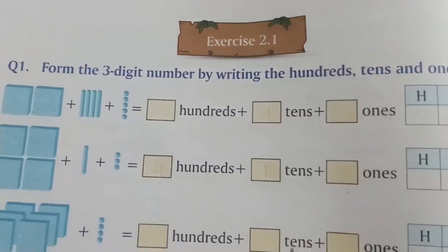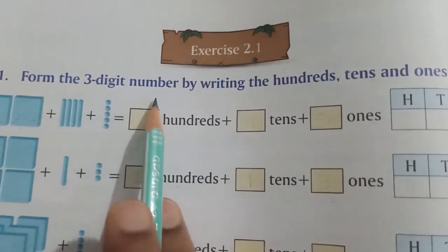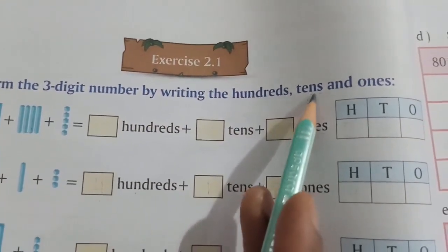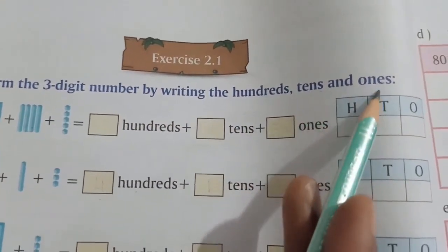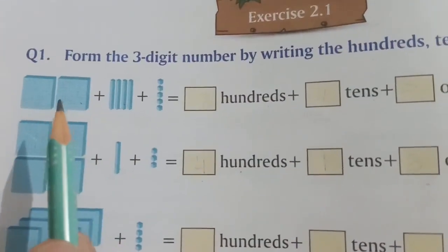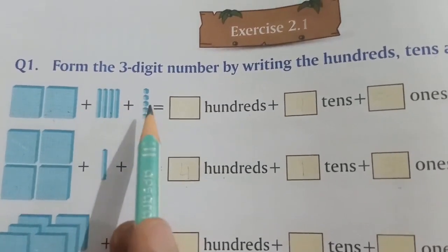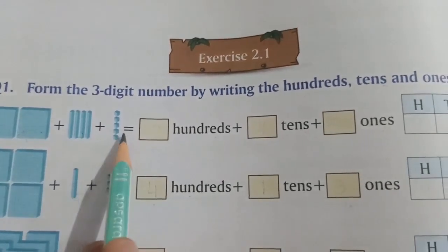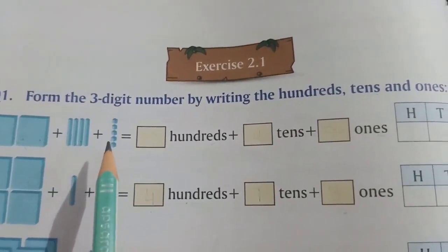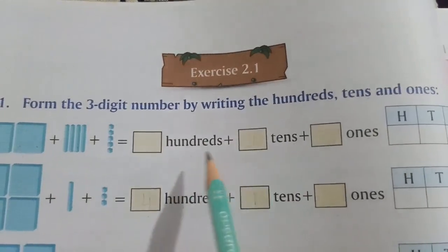Exercise 2.1: Form the three-digit number by writing the hundreds, tens and ones. Here you can see children — this is hundreds place, this is tens place, and this is ones place. We have to count the numbers of cubes and write it here.